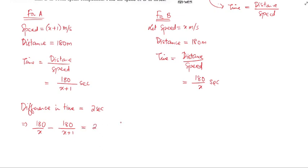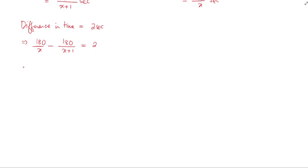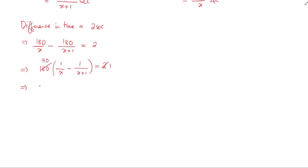Taking 180 as a common factor, we get: 180 times the quantity 1 over x minus 1 over x plus 1, equals 2. Taking the LCM, which is x times x plus 1, we simplify. Dividing both sides by 2, the 180 divided by 2 gives 90, so we get 90 times that LCM expression equals 1.